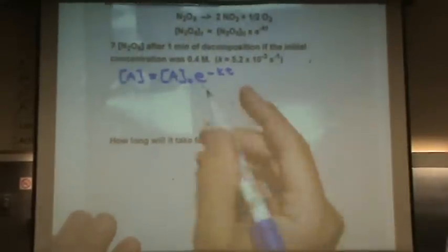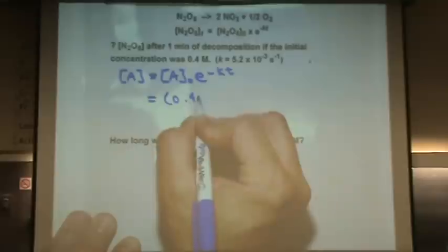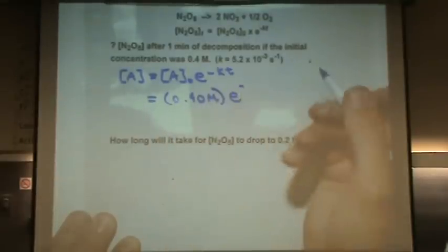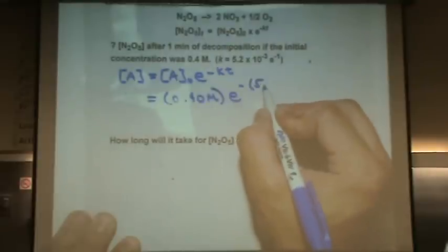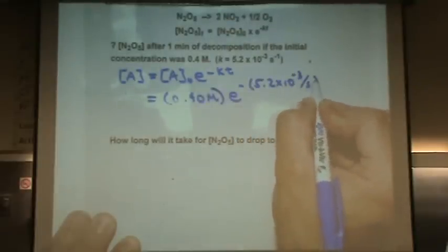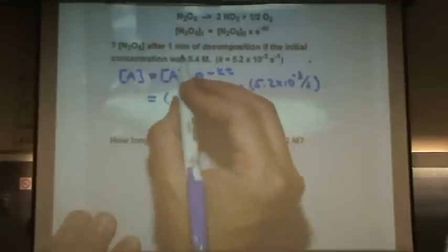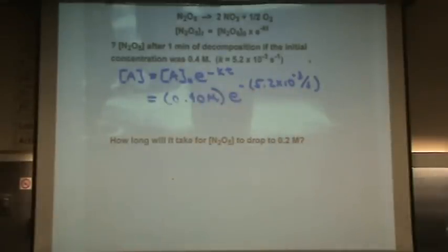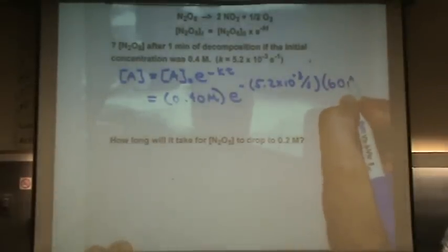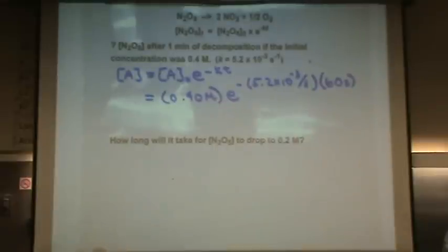I know the initial concentration is 0.40 molar, e to the minus K, 5.2 times 10 to the minus 3, it's 1 over seconds, times the time, one minute. Make sure you line up the units of time. So I'm not going to write one minute. I'll write 60 seconds so the time units will cancel seconds.